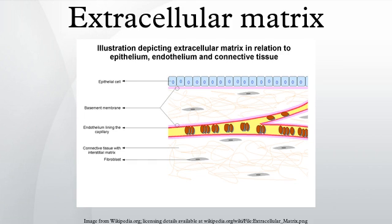In biology, the extracellular matrix is a collection of extracellular molecules secreted by cells that provide structural and biochemical support to the surrounding cells. Because multicellularity evolved independently in different multicellular lineages, the composition of ECM varies between multicellular structures.